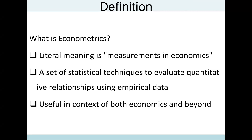It is easy to do that when you have quantitative variables. So econometrics is very necessary — it helps us to examine the relationship. With econometrics, we can even convert the information of qualitative variables and make them quantitative, so we can get the relationships using numbers. Econometrics refers to the measurements in economics; it is a set of statistical techniques used to evaluate quantitative relationships using empirical data.